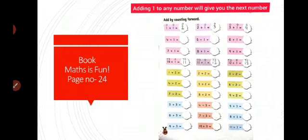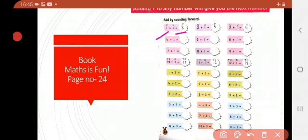Let's get started — add by counting forward. As you can see, the numbers are written horizontally. The first one is one plus one. Since these are one-digit numbers, write the place value chart. Put one on your head and one on your finger. What comes after one? Two! So one plus one is two.